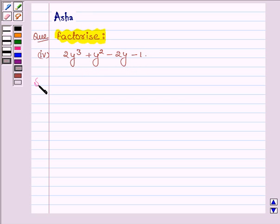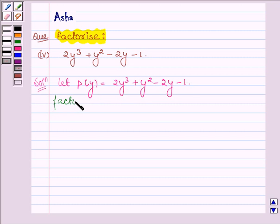So let us start with the solution and let p(y) be the given polynomial which is 2y³ + y² - 2y - 1. Now factors of -1 are ±1.